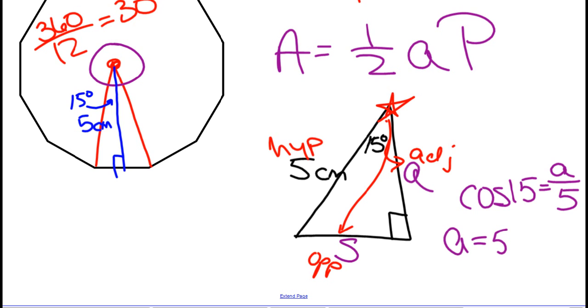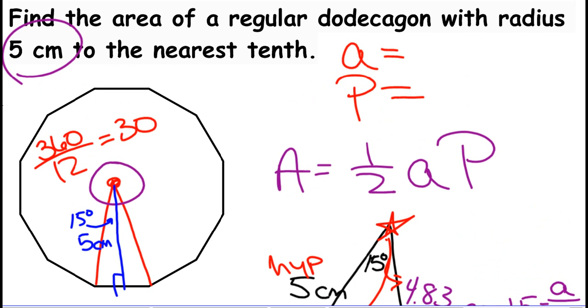5 times the cosine of 15. What did we get for that one? 4.83, right? All right. So 4.83. So I'm actually going to go and erase this. So I have it 4.83 on my diagram. And I'm going to go back and plug it up here, because I now have my apothem. So 4.83, we're dealing with centimeters.